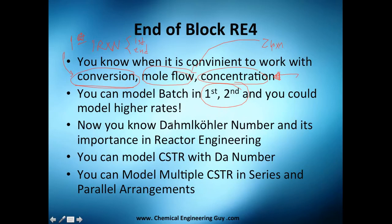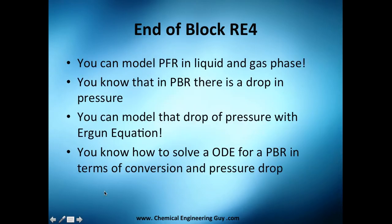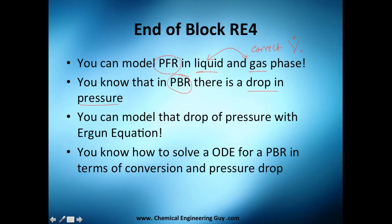You can now model a batch reactor with first and second order reactions. You know about the Damköhler number and why it is important in reactor engineering. You can model a CSTR not only alone but using the Damköhler number, and also model it in series and parallel arrangements — you know the importance of having multiple CSTRs. You can model a PFR in liquid and gas phase; a gas phase needs a correction for the volumetric flow rate.